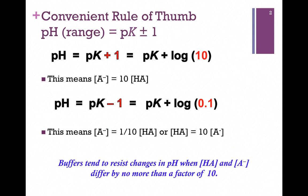Remember that's one pH unit above and below pK, or pH equals pK plus and minus 1. At the upper range, that would be pK plus 1. Remember this is a logarithmic scale, so in order to get plus 1, that would mean we take the log of the value 10. In other words, the concentration of the conjugate base at this upper limit is 10 times that of the concentration of the weak acid.